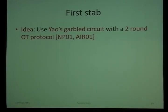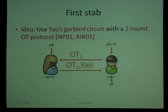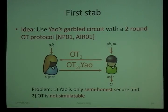We use Yao's garbled circuits with the two-round OT protocol. The user first sends the first message of the OT protocol, and the signer responds with the second message of the OT protocol along with the garbled circuit. The question is: are we done? Is it already secure? Well, there are certain problems. Yao's garbled circuit construction only provides semi-honest security, so we cannot directly use it. Also, OT is not fully simulatable, which causes issues with the proof.